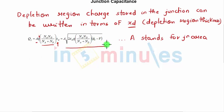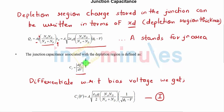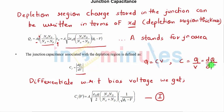The junction capacitance associated with the depletion region is CJ = dQJ/dV, since C = Q/V and we differentiate charge with respect to the bias voltage because the voltage varies. Differentiating the charge equation with respect to the reverse bias voltage gives Equation 1: CJ(V) = A × εSi × Q/2 × NA×ND/(NA+ND) × 1/sqrt(φ0 − V).